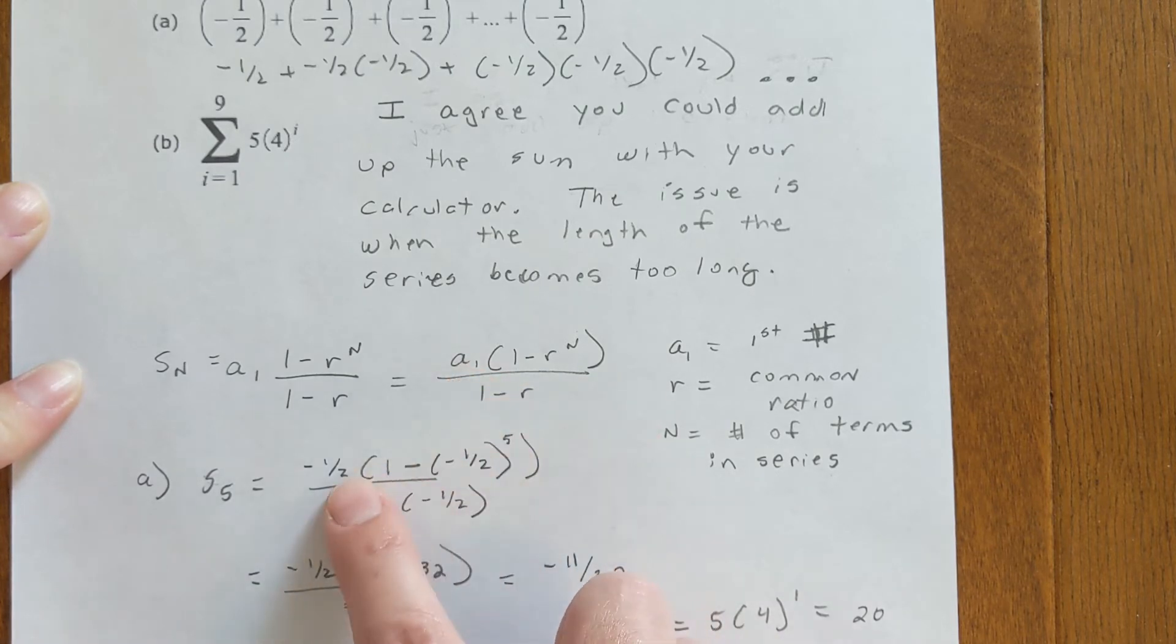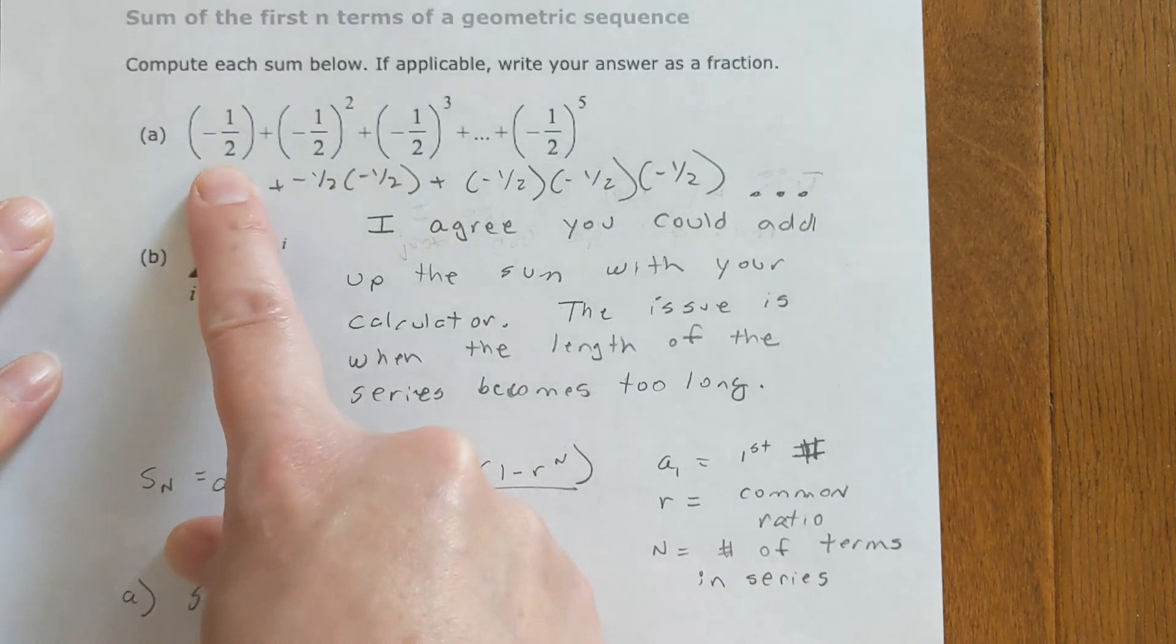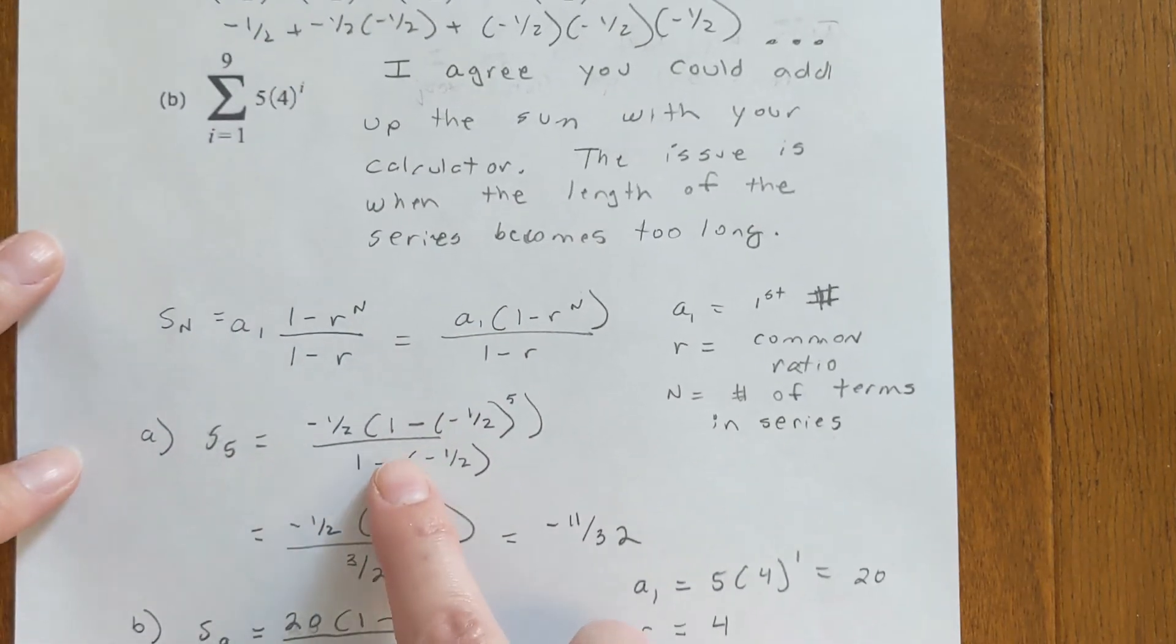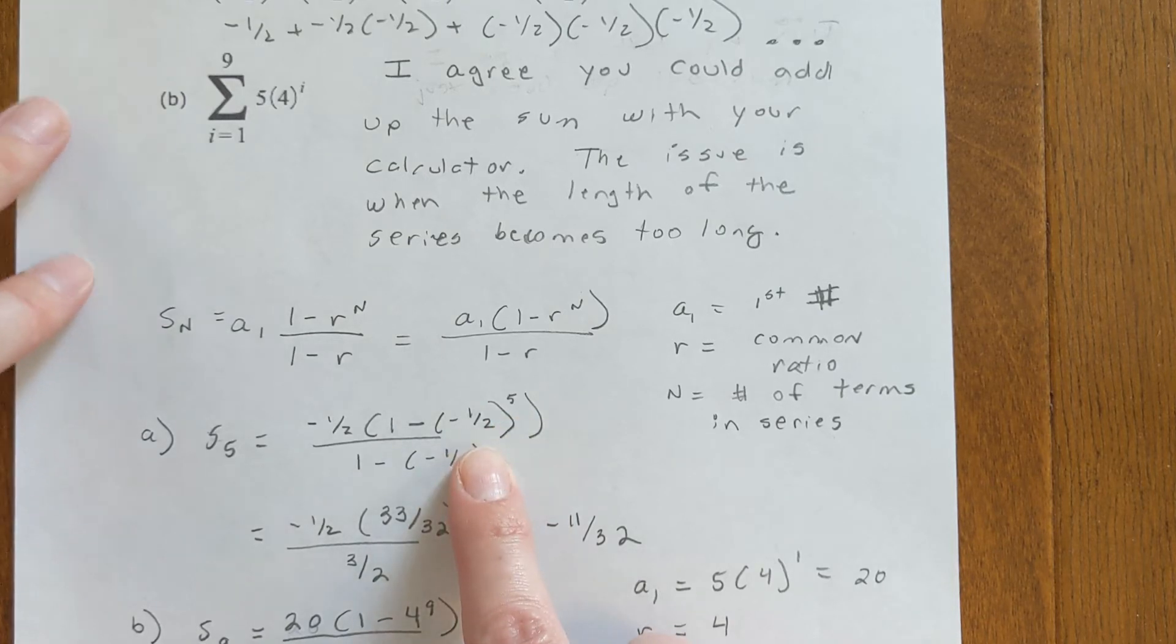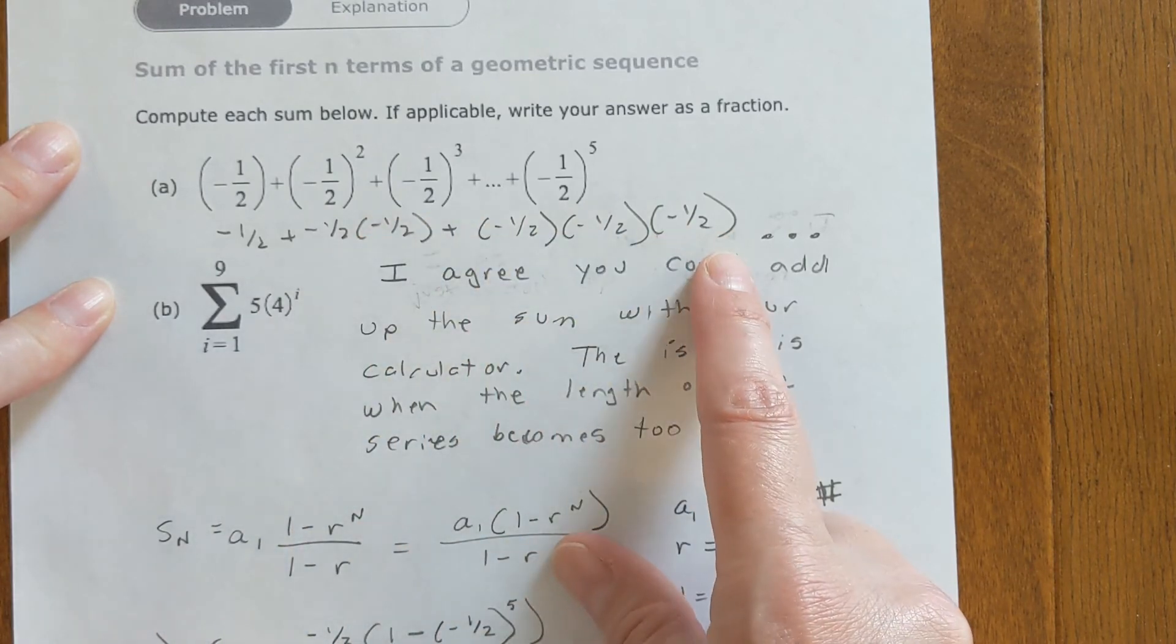So a₁ is negative 1/2 in the first one because that's the first term in the sequence. Then times 1 minus negative 1/2 to the fifth, because the common ratio is also negative 1/2, since each time it's multiplied by negative 1/2.